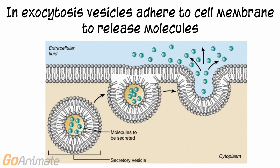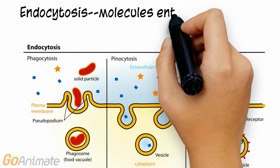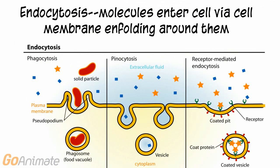Other methods of moving substances in and out of cells include exocytosis and endocytosis. In exocytosis, vesicles inside of the cell adhere to the cell membrane and release substances. Neurotransmitters are released this way. In endocytosis, the cell membrane unfolds around substances to bring them into the cell.